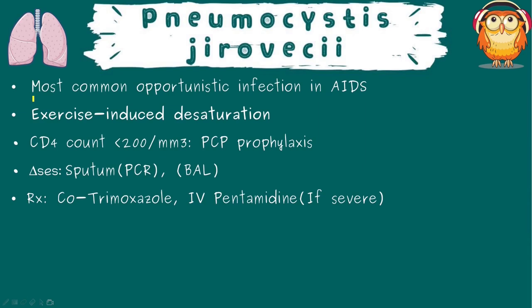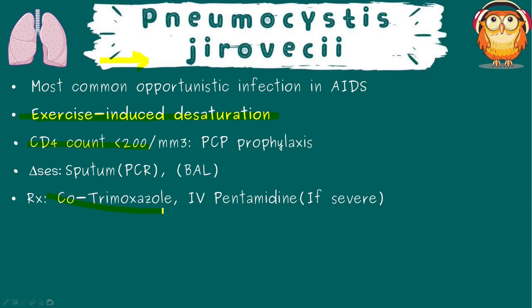Pneumocystis jirovecii is the most common opportunistic infection in AIDS, occurring when CD4 counts dip below 200. Exercise-induced desaturation is a very important marker. Fluffy shadowing around the perihilar area is characteristic. Treat with co-trimoxazole IV in severe disease, or IV pentamidine if very severe. Give steroids if the patient is hypoxic — PaO2 less than 9.3 kPa — which decreases the risk of respiratory failure by 50% and death by a third. In concurrent TB, treatment can be started simultaneously.